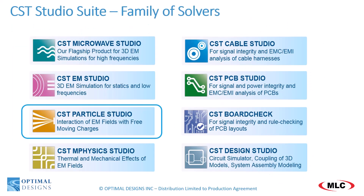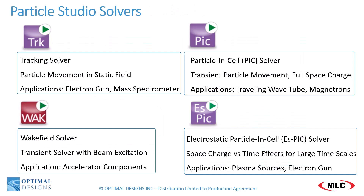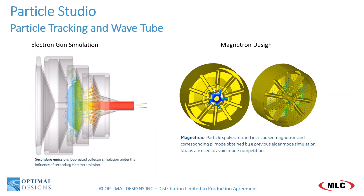Next, let's take a look at the industry's most unique set of solvers — Particle Studio. Particle Studio includes four solvers: the tracking solver for particle movement in a static EM field, the wake field solver for particle mean excitation, particle-in-cell solver for transient particle movement, and electrostatic particle-in-cell for space charge versus time. Few people know that CST's origin by Professor Thomas Weiland was to assist in designing the world's most advanced particle colliders. Particle Studio is a unique set of solvers rarely found in the market, with design examples including electron gun simulation and magnetron design.